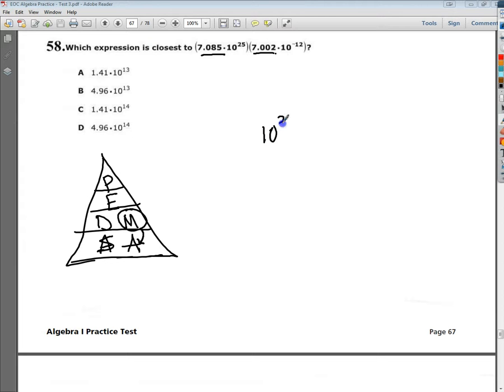So, I'm going to get 10 to the 25th times 10 to the negative 12th. I'm not going to multiply 25 times negative 12th. I'm just going to add them together. So, 25 minus 12 is 10 to the 13th.